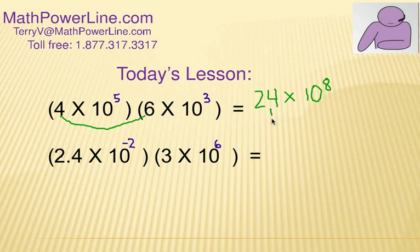Now what we've got to look at is this is not in scientific notation as an answer yet. 24 is really 2.4 and do you remember how to change it to scientific notation? Yeah, we're going to move the decimal in 1 and so it's going to be times 10 to the 1st.